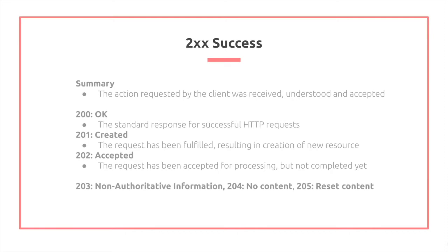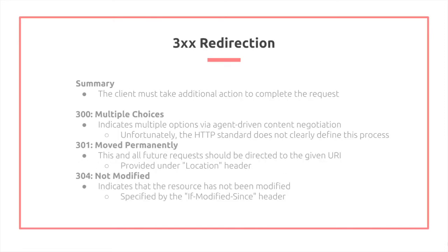The 300s refer to redirection, meaning that you need to take additional action to complete the request. For 300, multiple choices — for example, if you have a file system, you may have certain files to pick from, and this is conducted via agent-driven content negotiation. Unfortunately, the HTTP standard does not clearly define this process.